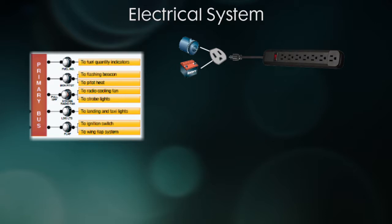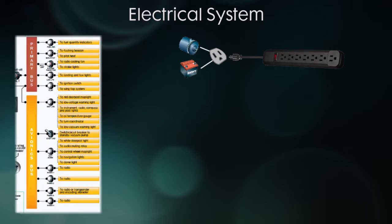So in this example you see a fuel quantity indicator, a beacon, pitot heat, strobe lights, and a couple other things plugged into that primary bus. Now we have another connection that goes to a second bus and you have additional things plugged into it. So it's like a power strip plugged into another power strip.